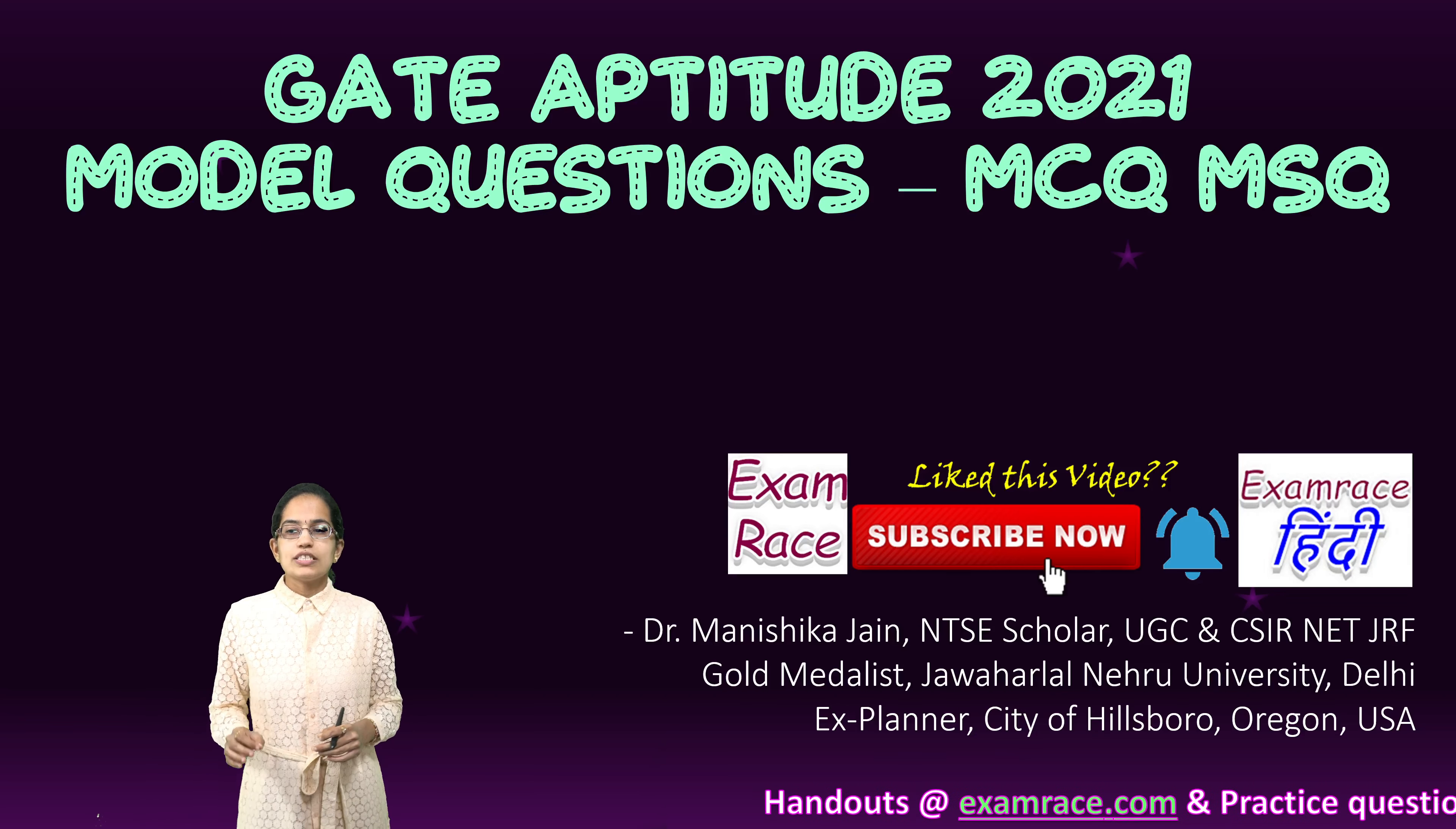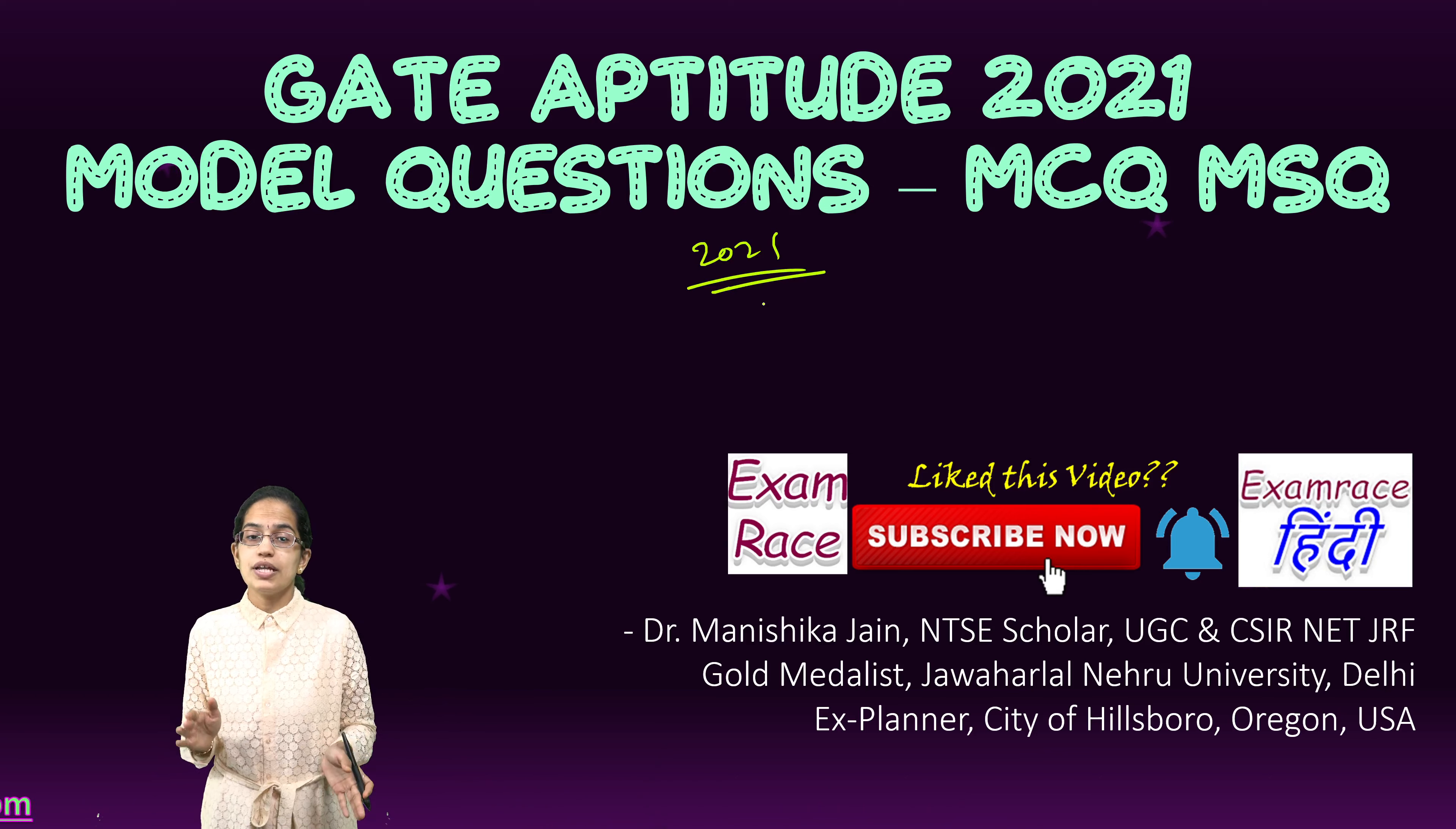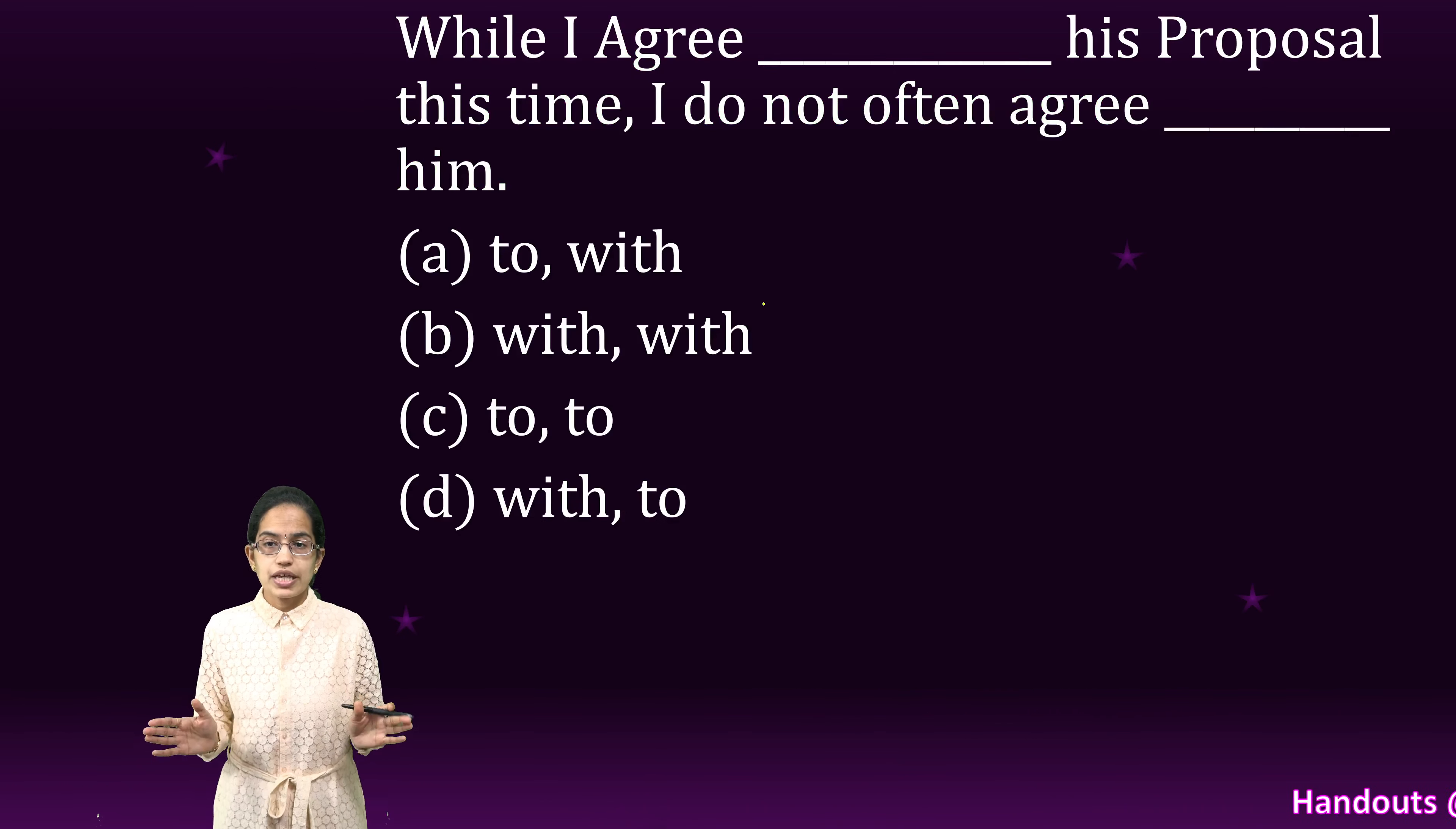We are solving some of the important questions of the GATE model questions that have been given in the HSS section, that is Humanities and Social Sciences, for your aptitude 2021. Note that the questions given in the model paper 2021 are much simpler than the 2020 actual exam aptitude questions, which we have covered in a separate lecture. The idea is probably for this aptitude which is for social sciences you can have simpler questions, but you must go through the 2020 paper that we have covered separately because the level of question is significantly different.